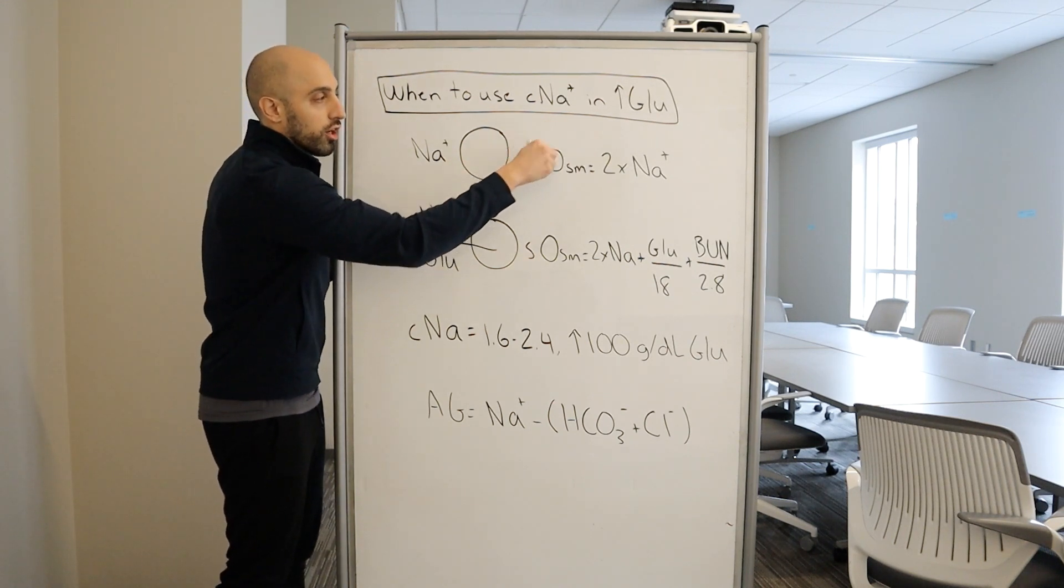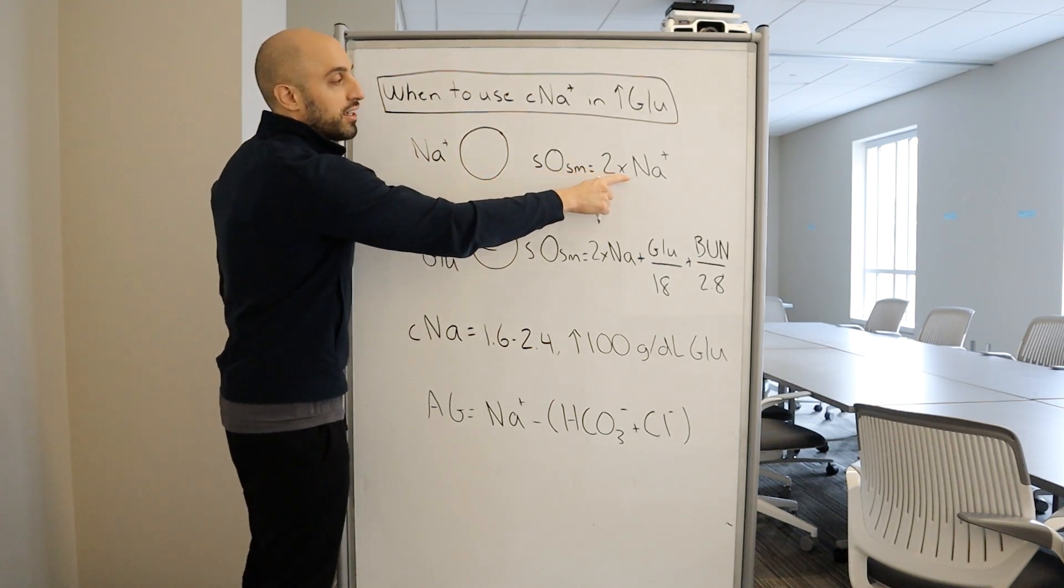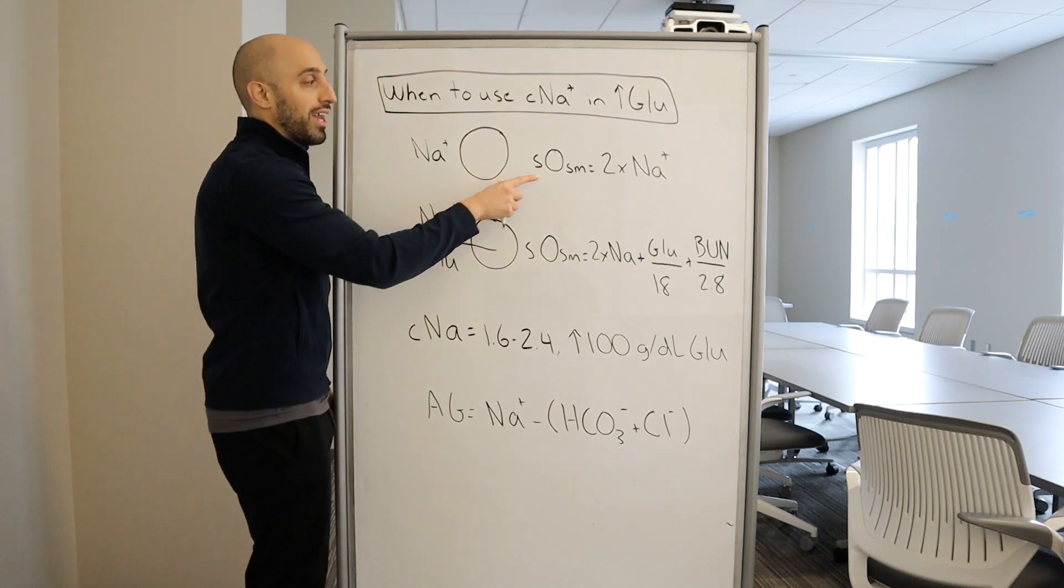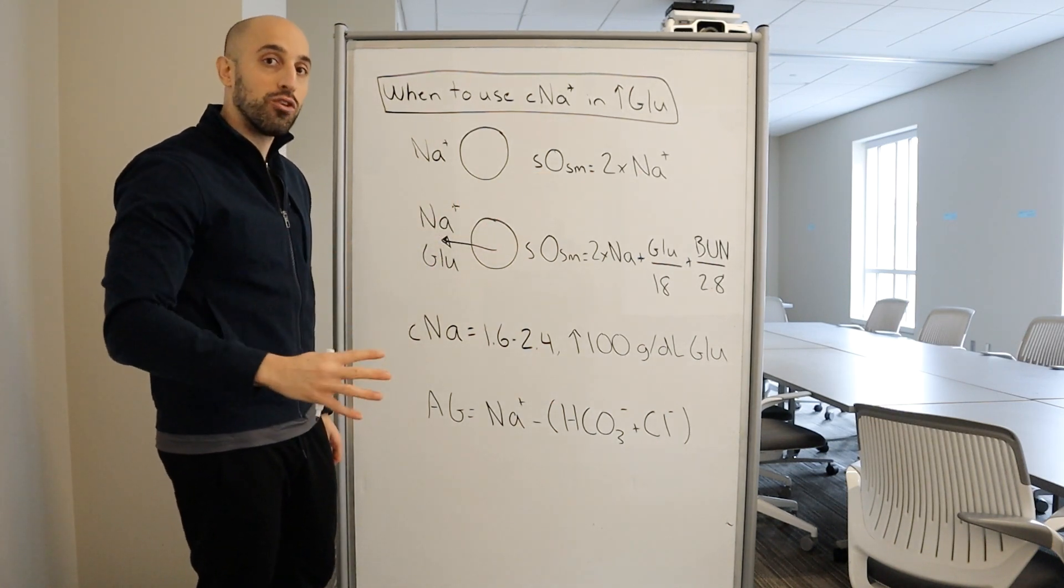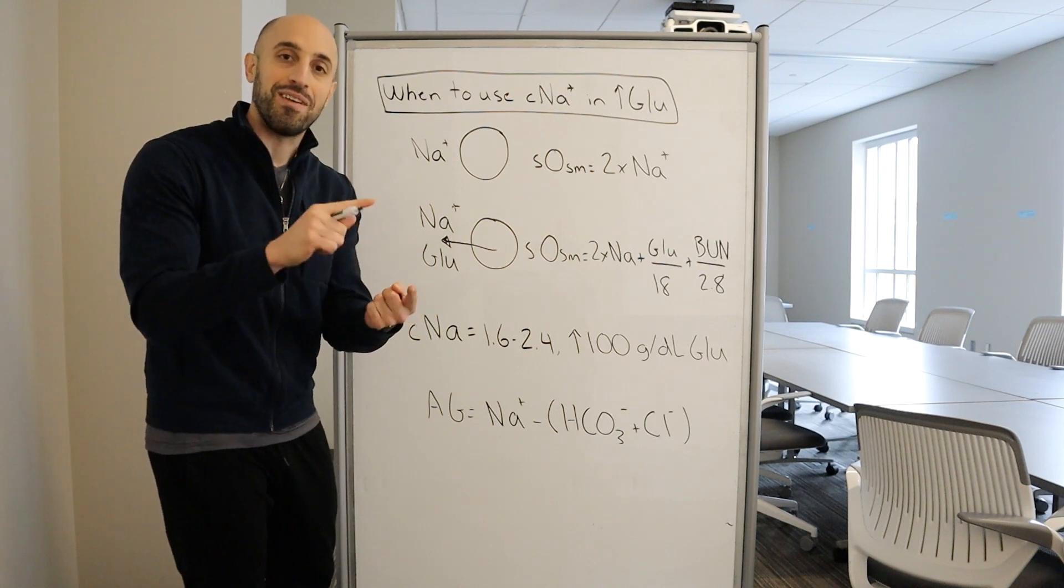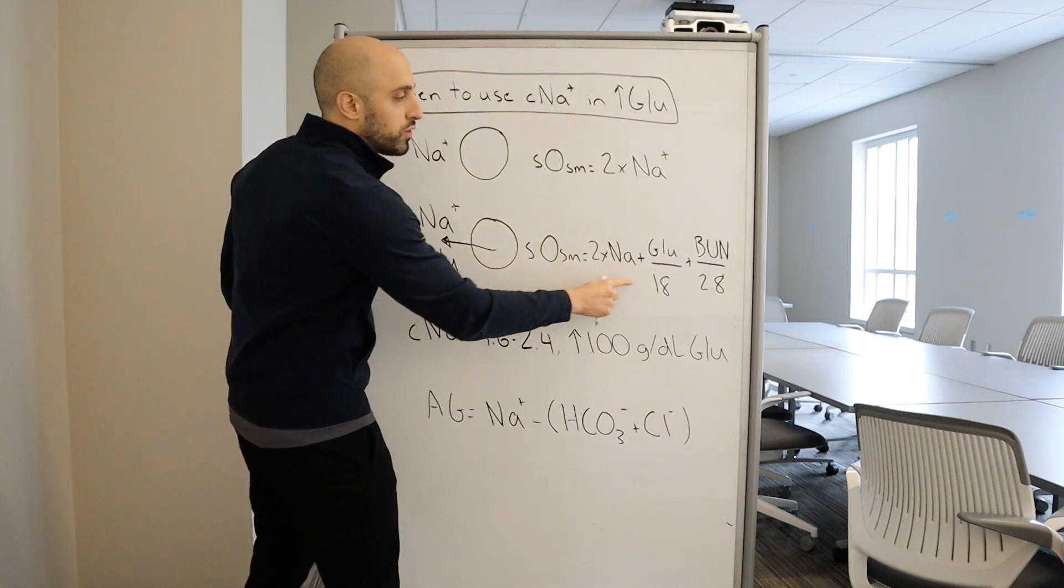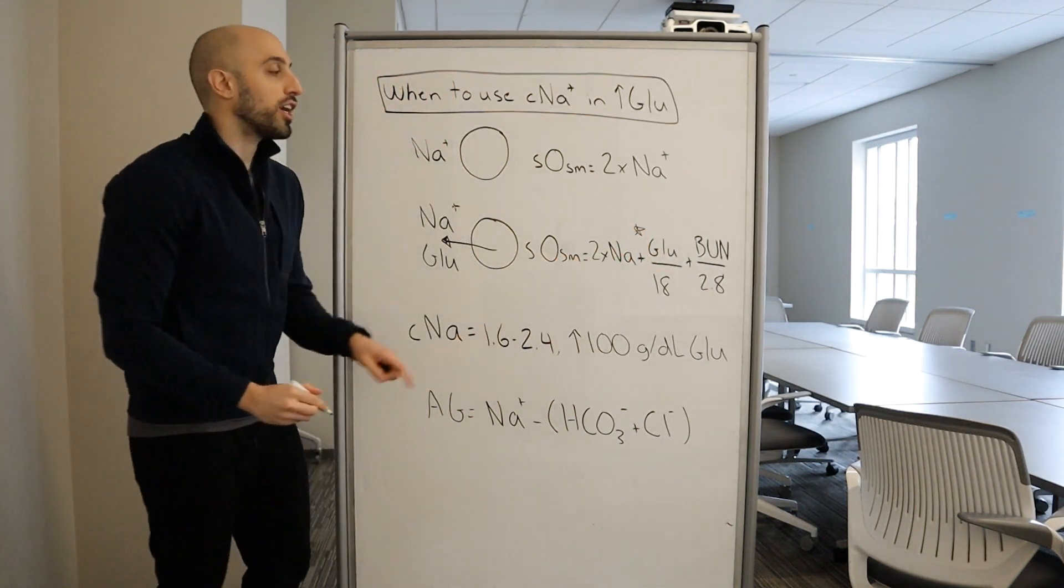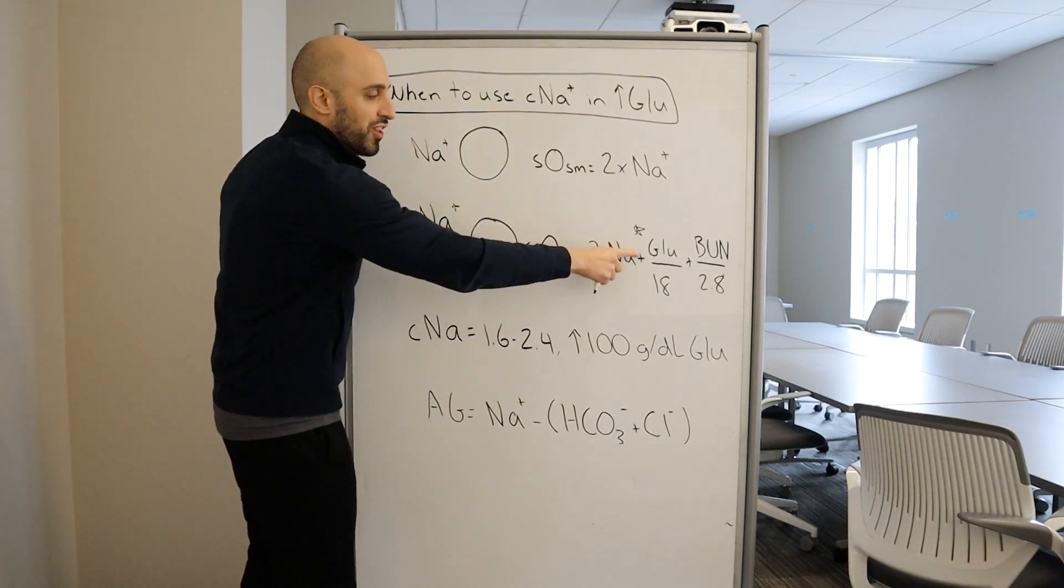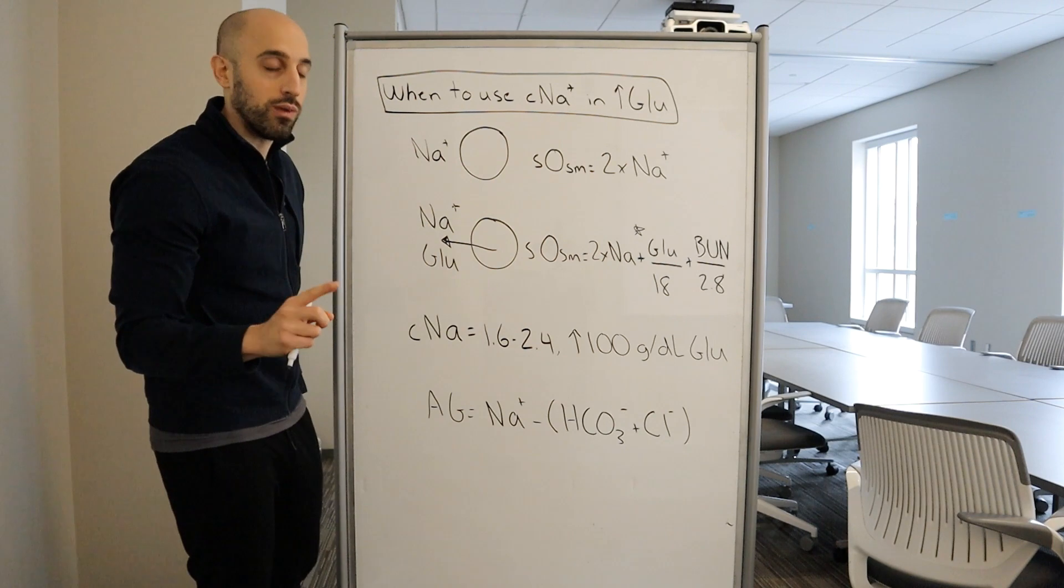So you can no longer use this equation to estimate osmolality. Because if you use this equation, you're dealing with a diluted sodium that you're not correcting for glucose. Thereby, you would underestimate the serum osmolality. So what equation should you use? Well, one option is to measure the serum osmolality. But before that serum osmolality returns from the lab, you can use this equation where now you're accounting for the glucose. You could always use this equation, but under normal circumstances, when the glucose is 90 to 100, it only contributes 5 osmols to the serum osmolality.